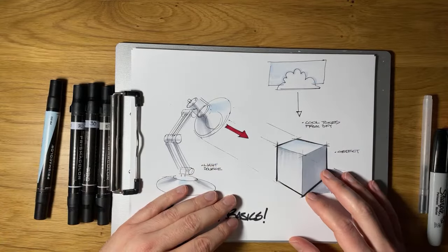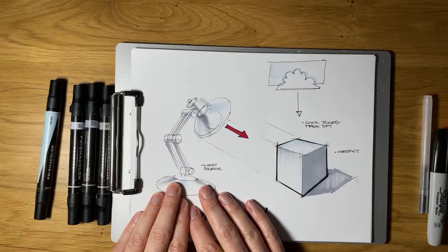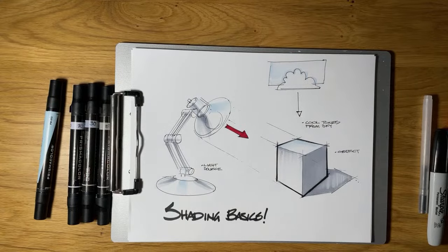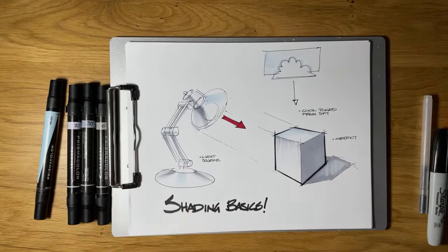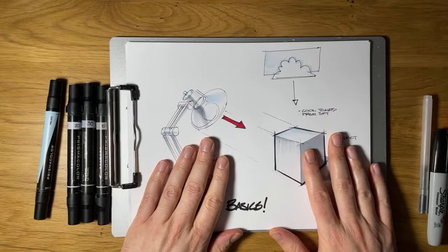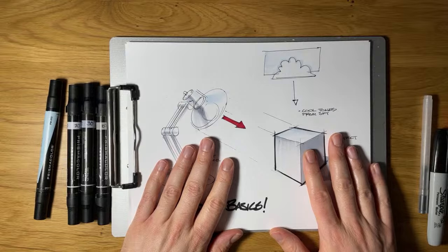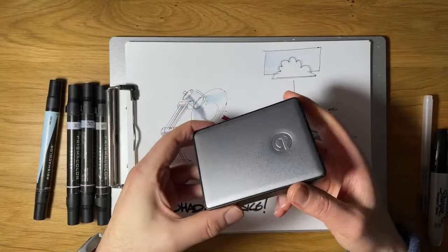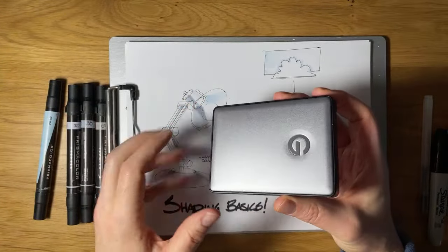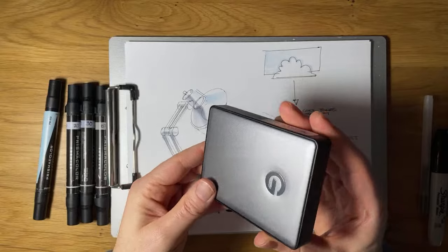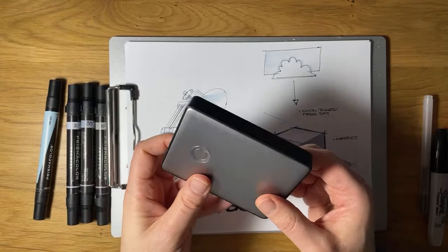This is the 101 level - thinking about a light source, an object, and the environment around it, and then trying to represent it in as simple a form as possible. In reality, I can give you a bunch of tips, but the best thing I can recommend is to just study objects. Like here's a little G drive here, and you can see I have a light source kind of in the upper left.